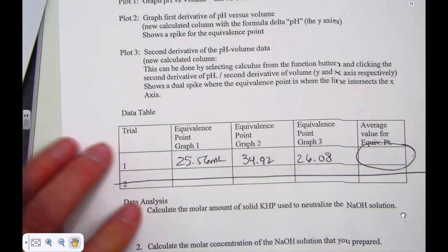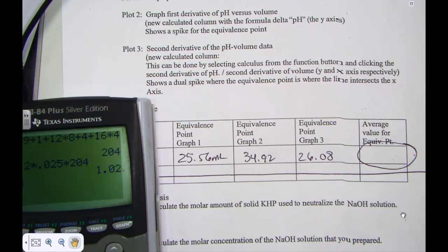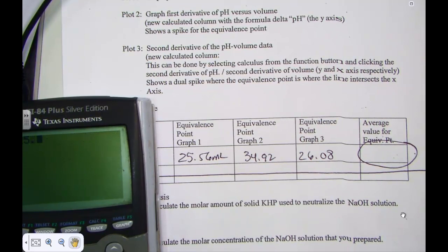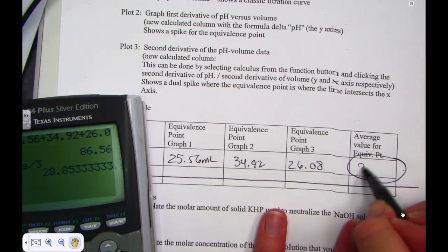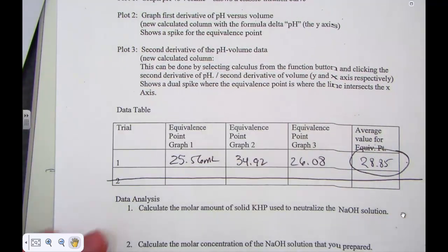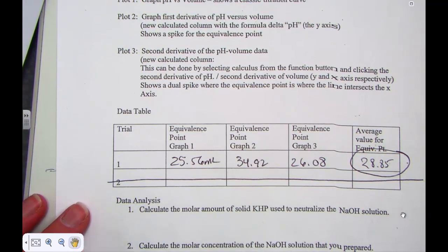Whatever it comes out to be, your information by far is going to be more accurate. Remember that I simply made numbers up to give a flavor of a curve to show processing. I'm going to add up these three values, divide by three and come up with a 28.85 mil average. That's what we're going to need to carry on some information down here.